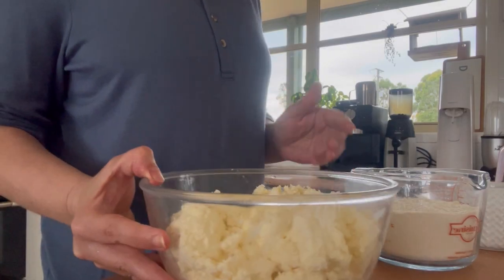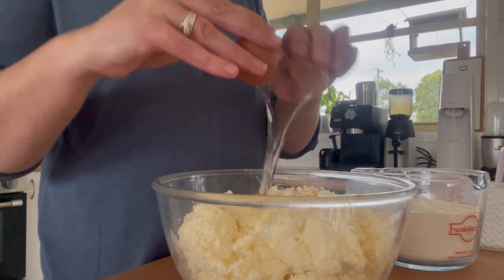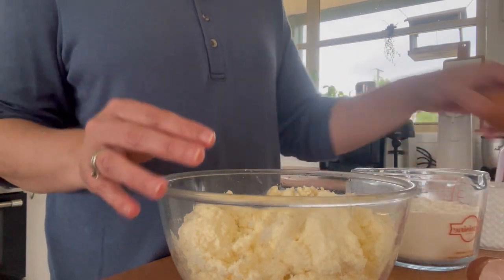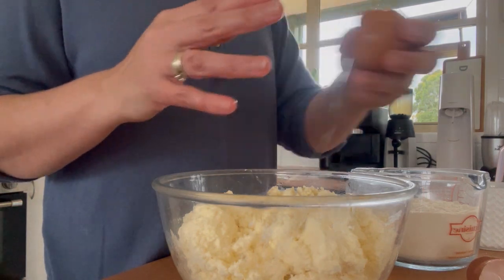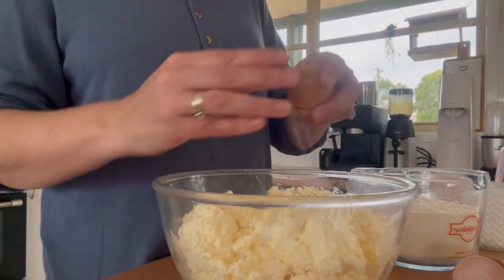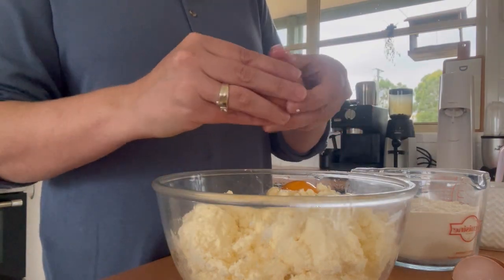So I'm making a quadruple batch of the ricotta gnudi. I have 900 grams of ricotta, four eggs. I'll list the recipe in the description.